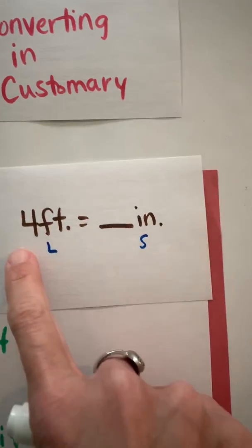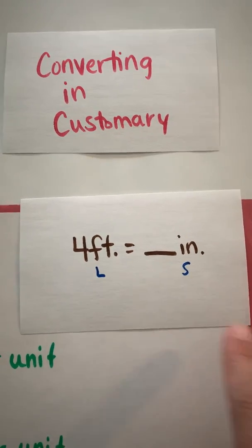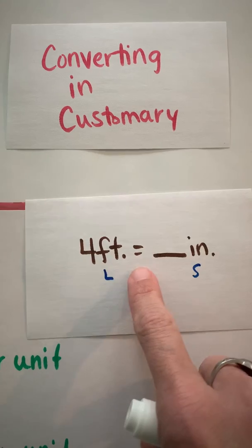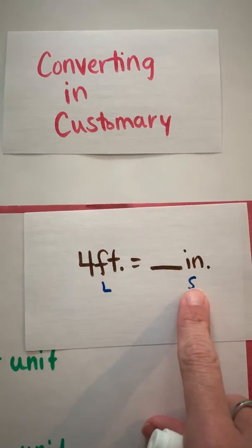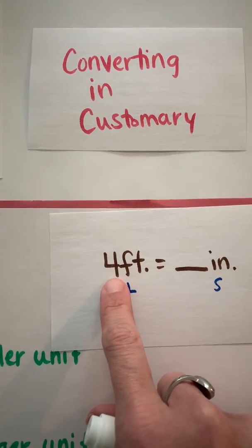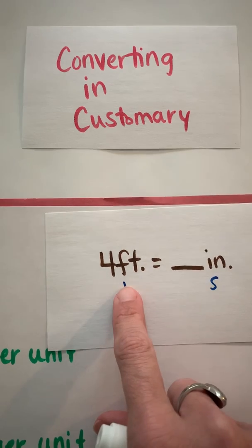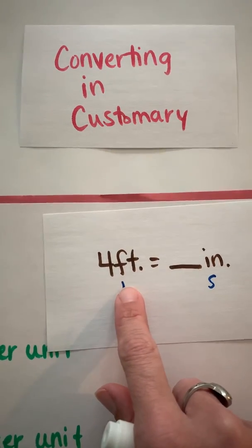Now if I had blank inches equals four feet, I could rewrite it so that my four feet is first, equals blank inches. I want to start with what I know to what I don't know. Because if I had my blank here, blank inches equals four feet, I would not be converting from a small to a large. So remember you want to start with what you know. I know it's four feet. I want to know how many inches, so I'm going from a larger unit to a smaller unit.